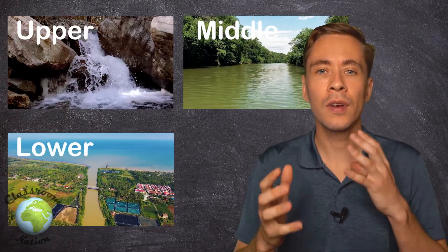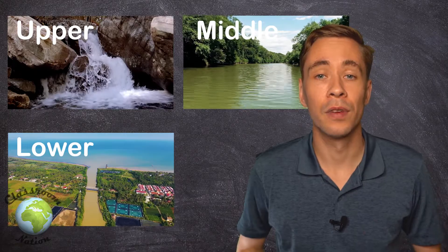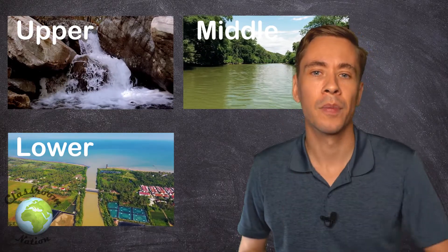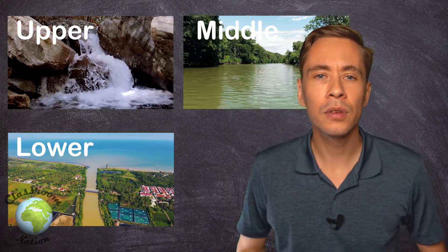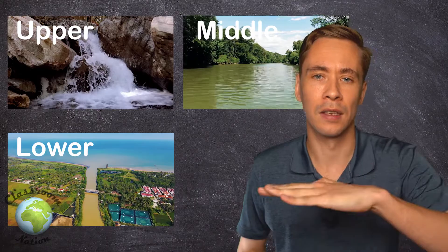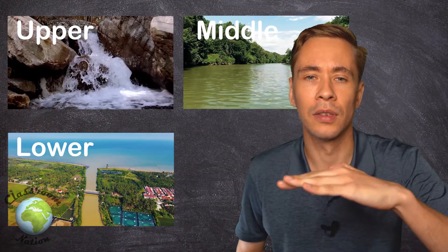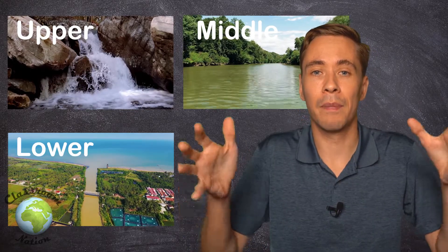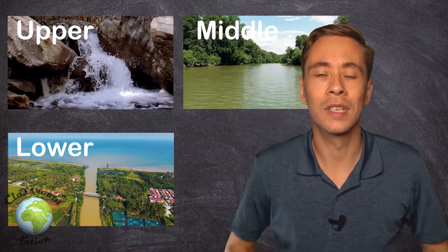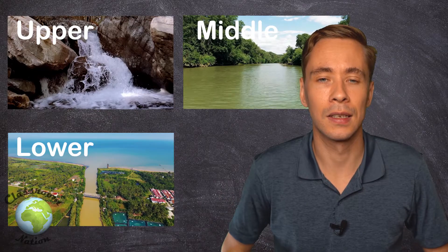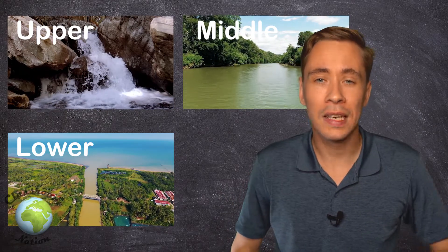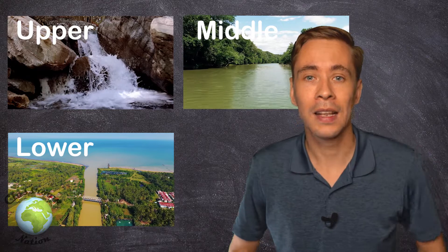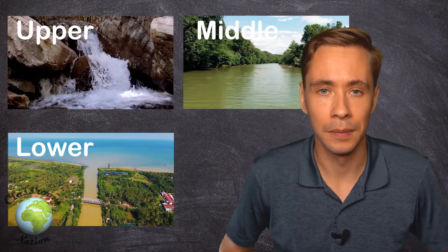The river upper course is where the river begins — it's very steep and mountainous. The middle course is flatter and the river begins to slow down, but it gets bigger and bigger because more and more water enters the system. The lower course is extremely flat and it is where the river meets the sea.